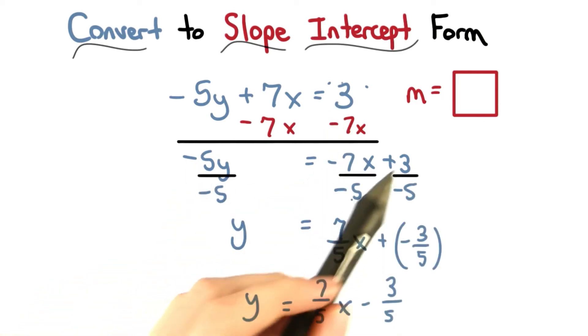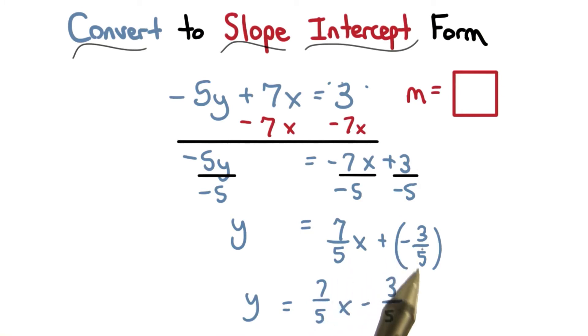Next, we divide every term by negative 5 to get y equals 7 fifths x plus negative 3 fifths. I have a minus sign here, so I know the second term is really just a negative.